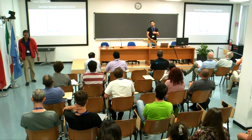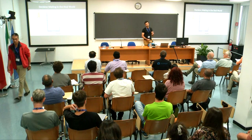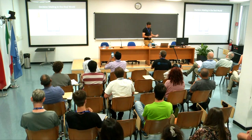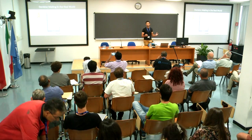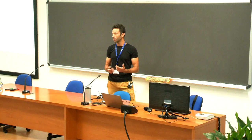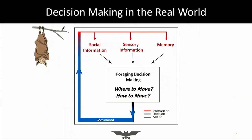What my lab is interested in is how animals make decisions. Take a bat that is in its roost a few minutes after sunset. This bat has to make many decisions — where to move, how to move, whether to move alone or in a group, which trajectory to use. When making these decisions, the bat has multiple types of information sources: its own sensory information, social information from peers, and higher cognitive capacities such as memory.